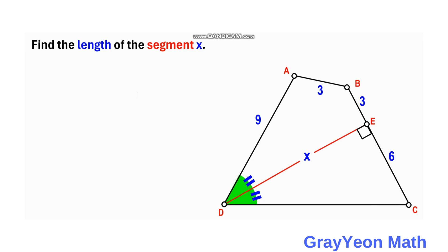First, notice that at point E this is also a 90-degree angle, because this is a straight line and one side is 90 degrees, so the other must also be 90 degrees. Next, we continue segment BC and continue segment AD upwards until these two segments meet at a certain point. Let's call this point F.